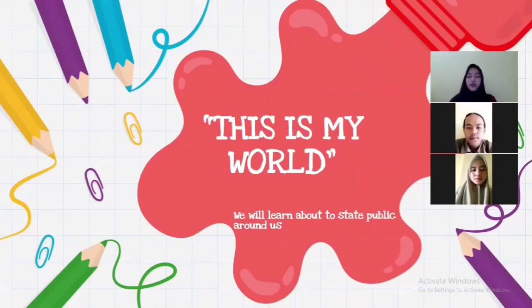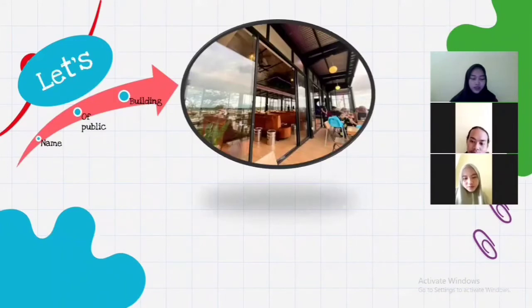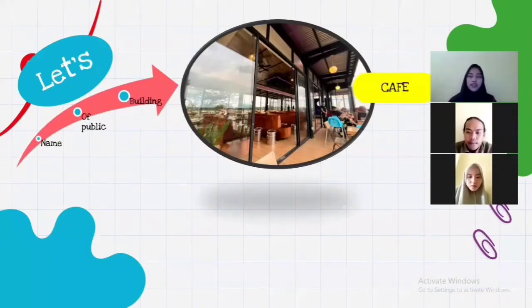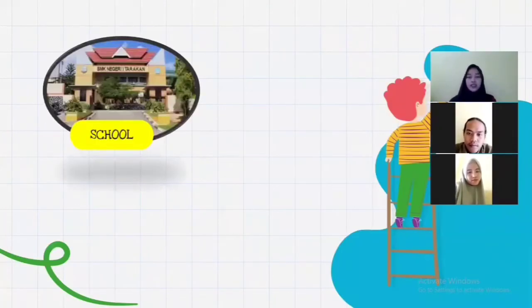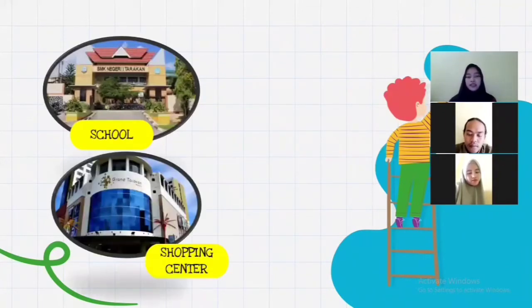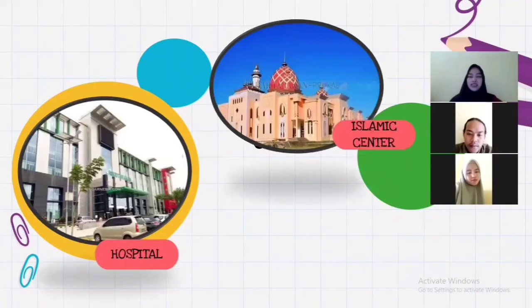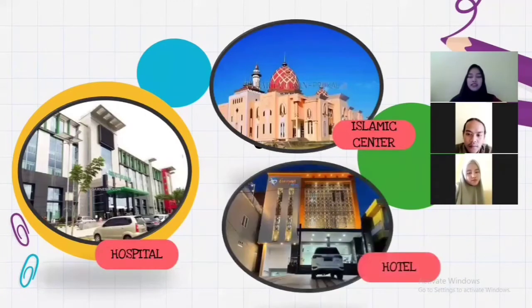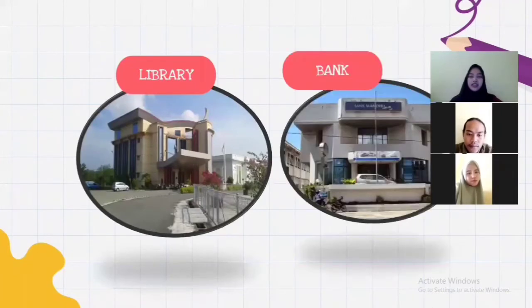We are going to learn the names of public buildings. The first is TV station. The second is bank. The third is school. The fourth is shopping center. The fifth is police station. The sixth is hospital. The seventh is Islamic center. The eighth is hotel. And the last is library.